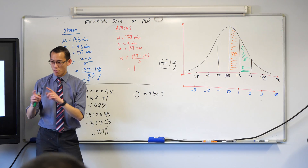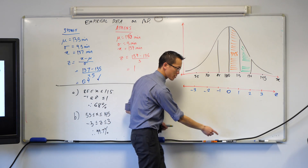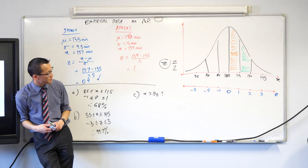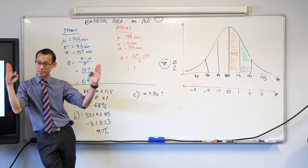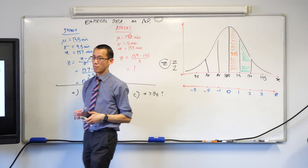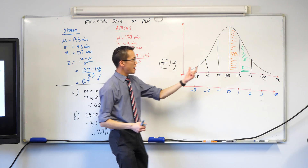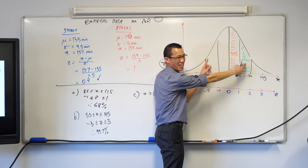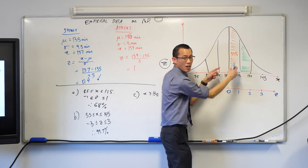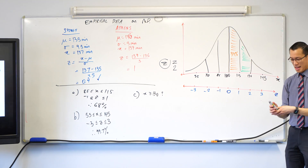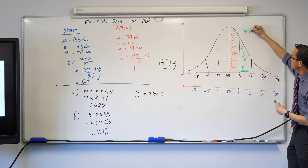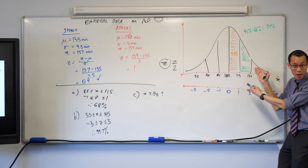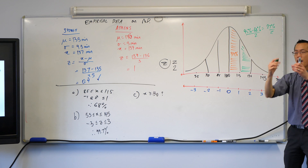Now look at the next section over — how big is it? Think about it. If I went all the way out to two standard deviations, that's 95%, right? If I subtract the 68% in the middle, that leaves me with the two outer sections. 95 minus 68 is 27. But I don't want two of them, just one — so I divide by two, which gives me 13.5%.